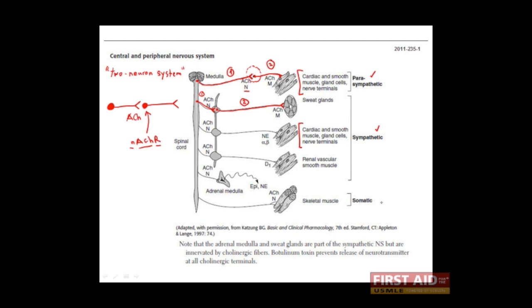In the figure we've also drawn out the somatic nervous system — those nerve fibers that innervate voluntary skeletal muscle. Notice that this is not a two-neuron system. From the spinal cord, we have a single neuron located in the anterior or ventral horn, which extends all the way out to reach its target organ. In the two-neuron system, we call the first neuron, which releases acetylcholine, the preganglionic neuron, because it precedes the ganglion. By analogy, the second neuron is known as the postganglionic neuron.